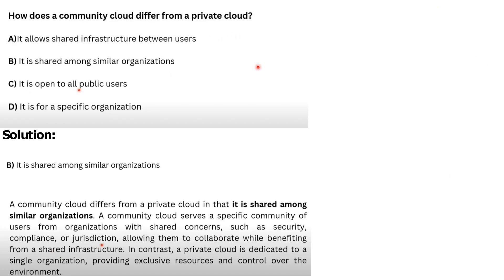Next question: How does a community cloud differ from a private cloud? Options: A) It allows shared infrastructure between users, B) It is shared among similar organizations, C) It is open to all public users, D) It is for a specific organization. The correct answer is: it is shared among similar organizations.